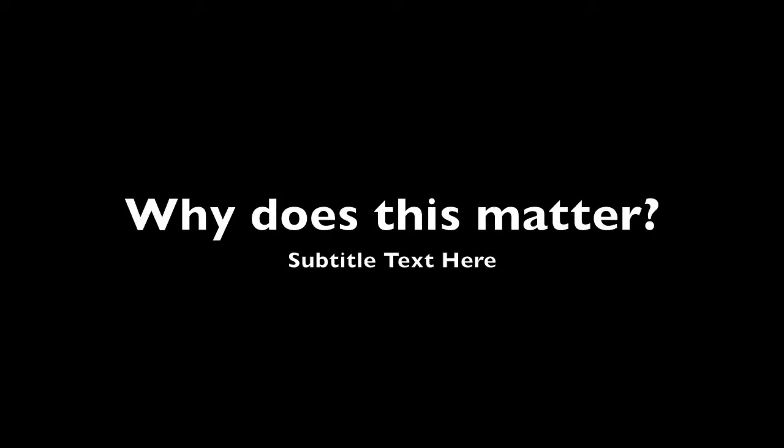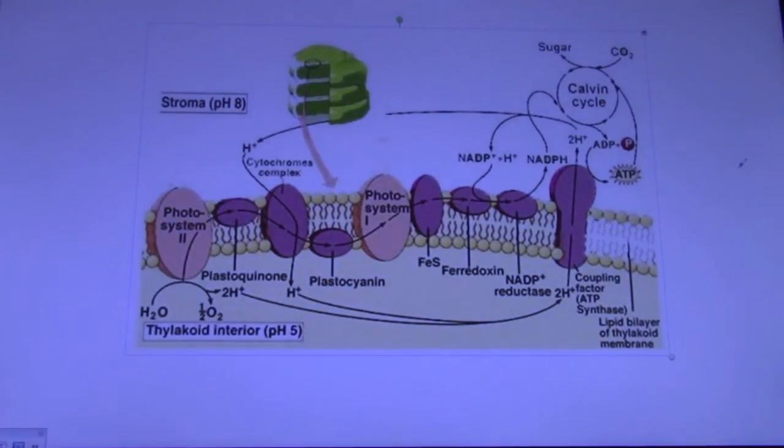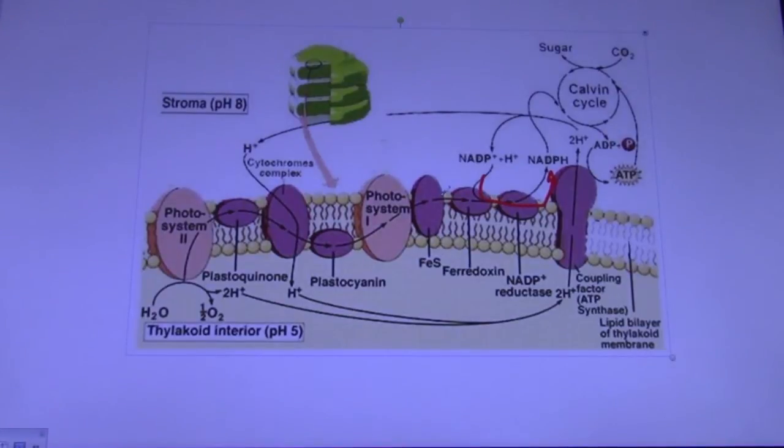So why is ferrodoxin so important? Ferrodoxin functions as an electron carrier that ultimately allows for the reduction of NADP+ to NADPH. It allows the electrons that were removed from water to be used as part of an electron transport chain.